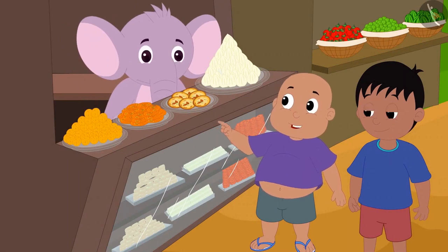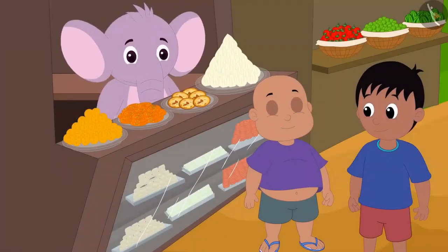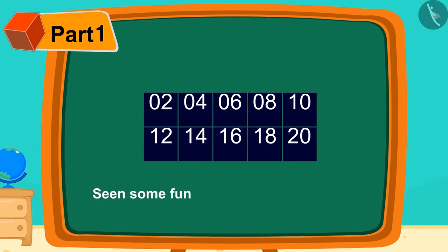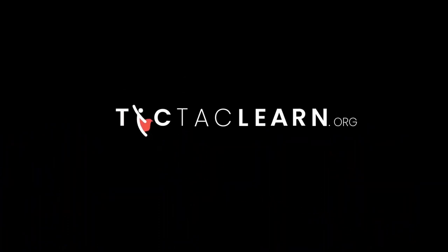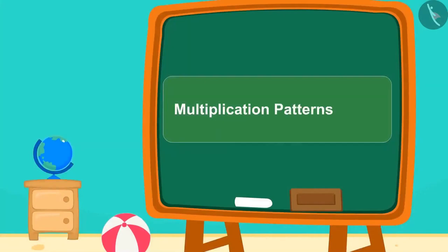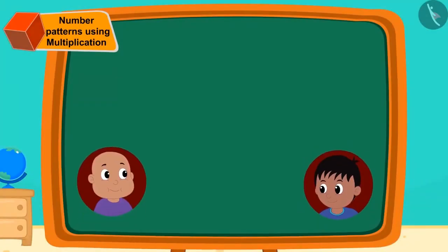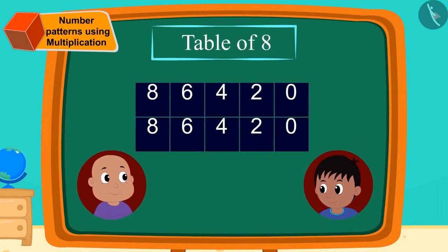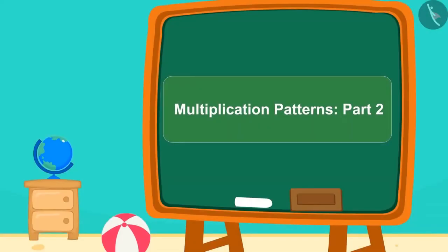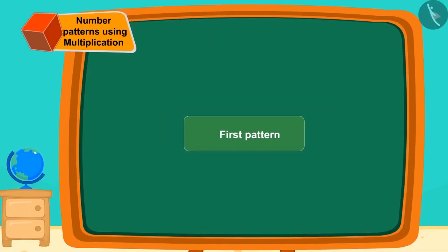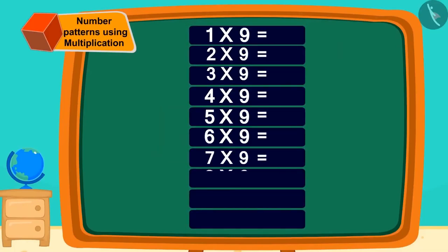Babalu was so happy to learn these unique patterns for memorizing tables, and he bought Raju 2 more laddus from Appu's shop. Children, in this lesson we have seen some fun patterns of multiplication. In the previous lesson, we saw how Raju gave Babalu an easy way to memorize the tables with some unique patterns. Would you like to learn some more such patterns? Let us see 2 unique patterns to memorize the table of 9 easily.